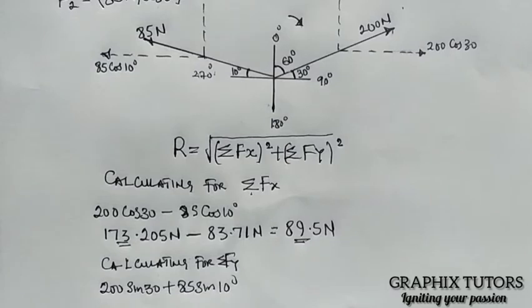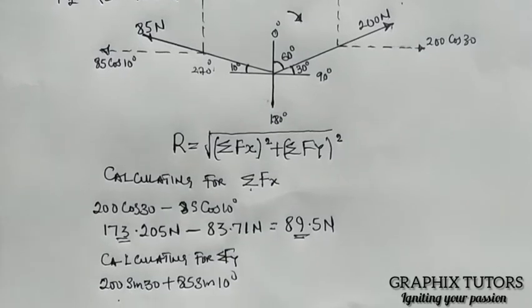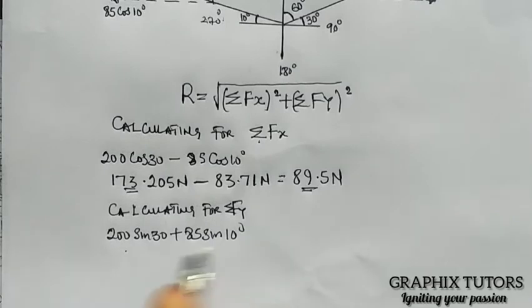That's the first thing. Now, also, if you do this, 200 sine 30 will give me 100. Plus 85 sine 10, which is 14.76.